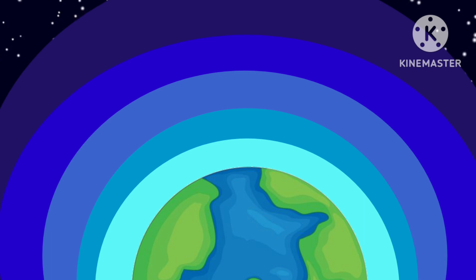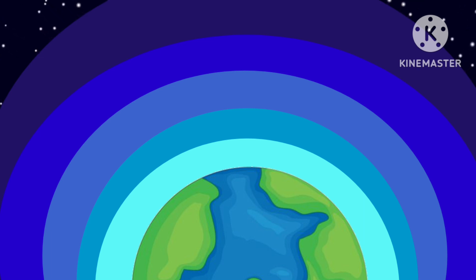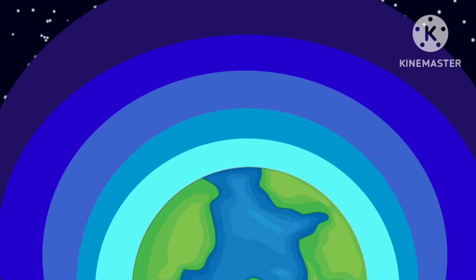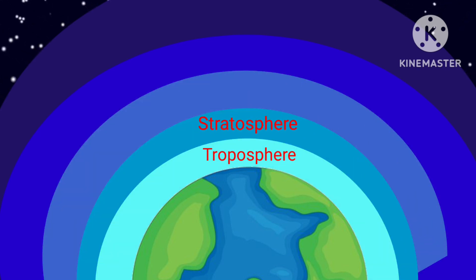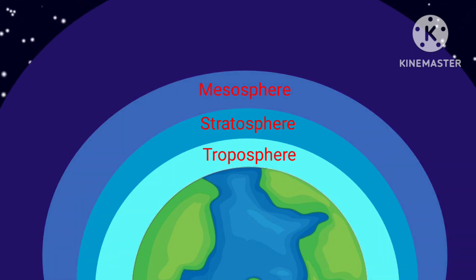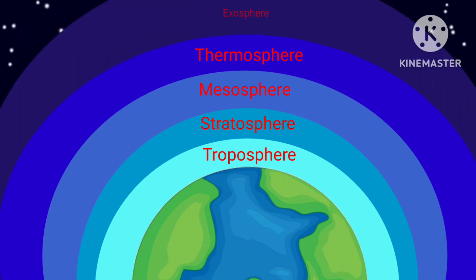The atmosphere can be divided into layers based on its temperature. These layers are the troposphere, the stratosphere, mesosphere, thermosphere, and the exosphere.